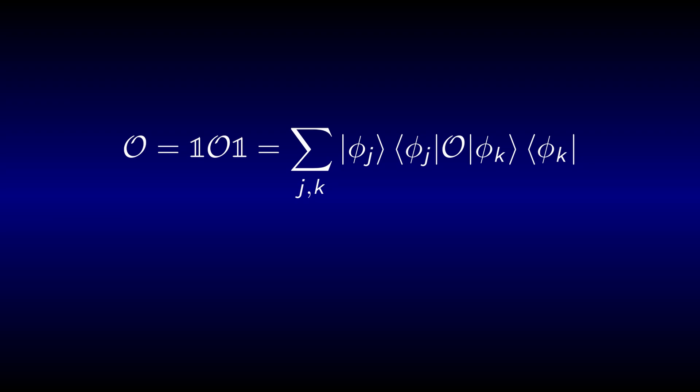It looks like an expectation value of O, but with in general different wave functions as the left and right entry. Nevertheless, this expression, when evaluated, gives you a number for every combination of the indices j and k.